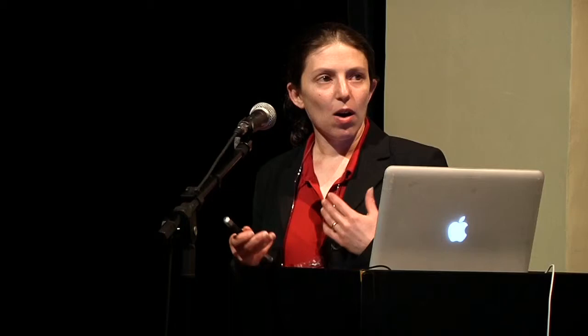In practice, a patient could be subjected to leukapheresis so all of their immune cells could be collected, monocytes and CD8 T cells would be depleted, and the sample would be enriched for CD4 T cells. They would then be transduced with the product containing the zinc finger nuclease, which would delete the CCR5 gene from these cells. These cells would be expanded and infused back into the patient to see whether it would help control HIV and increase CD4 counts.